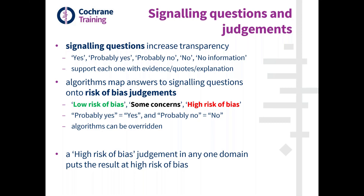Each answer should be supported with quotes or comments to explain why that answer was given. This is particularly important when the answer reflects a bad thing that has happened — you should definitely explain that either with a quote or an explanation. The tool also incorporates algorithms: once you have answered the signaling questions, the default risk of bias judgments will be suggested by the algorithm.